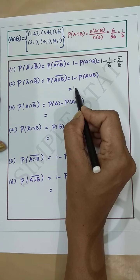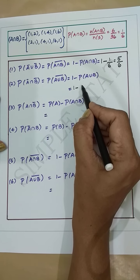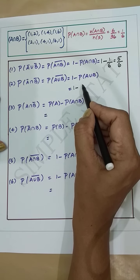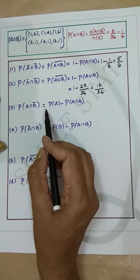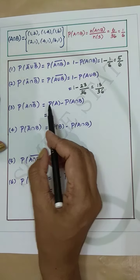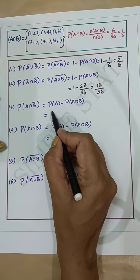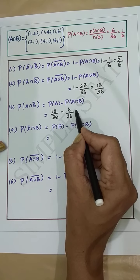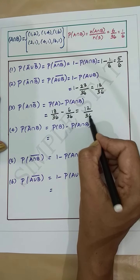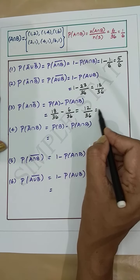Second subdivision: probability of A-bar intersection B-bar equals 1 minus probability of A union B, which is 1 minus 23/36 = 13/36. Third subdivision: probability of A intersection B-bar equals probability of A minus probability of A intersection B, which is 18/36 minus 6/36 = 12/36 = 1/3.